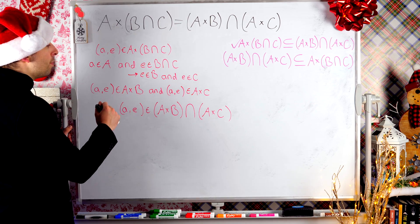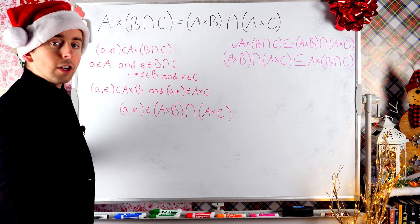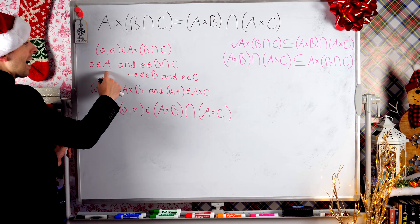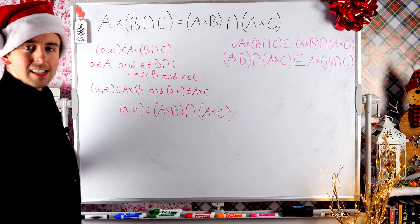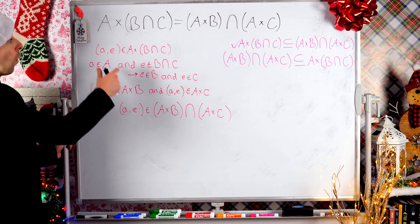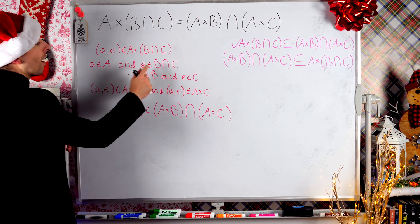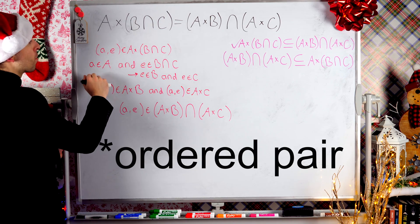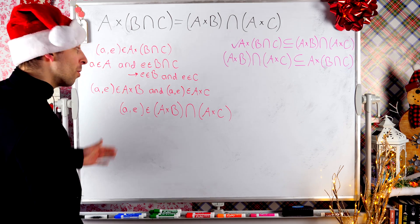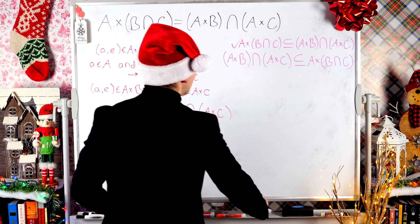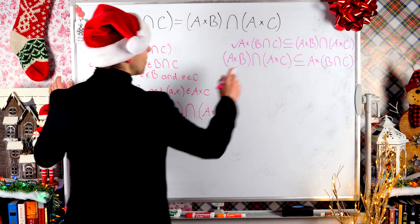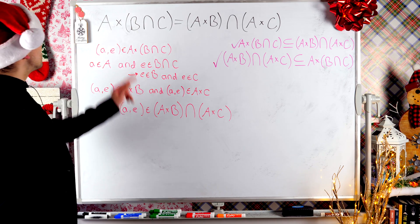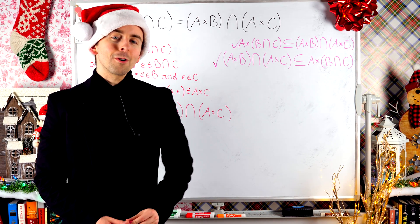If e is an element of B and e is an element of C, then by definition of set intersection, e is an element of B intersect C. But then, if a is an element of A and e is an element of B intersect C, then by definition of Cartesian product, the ordered pair (a, e) is an element of A cross B intersect C. Same steps, but in reverse. That proves that the intersection of A cross B with A cross C is a subset of A cross B intersect C. We've proven that the Cartesian product does indeed distribute over set intersection.